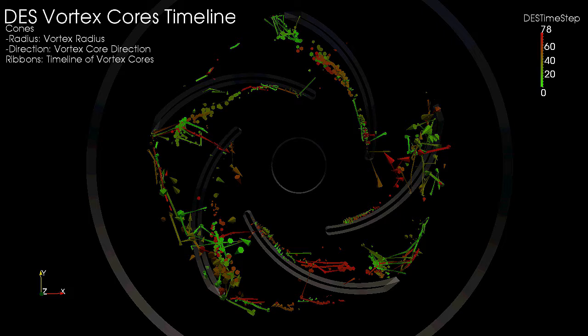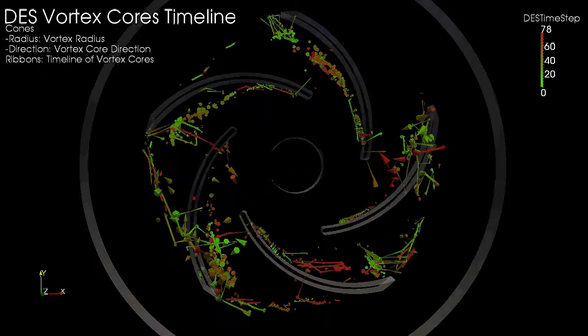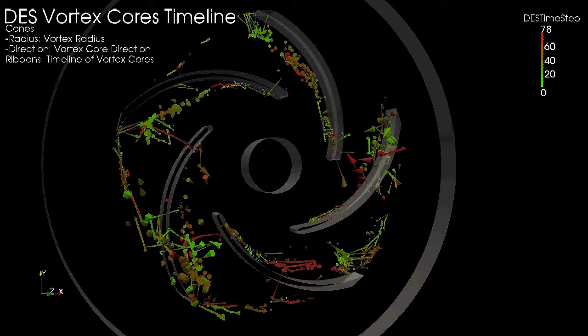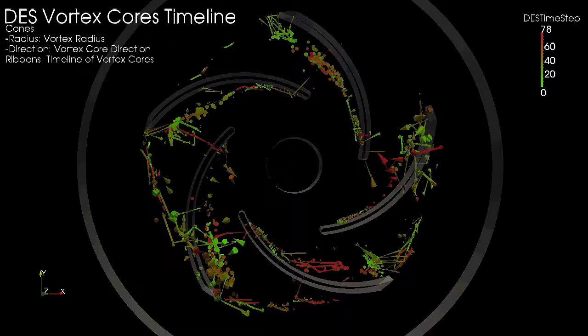Each ribbon's center moves from the initial time step, colored in green, through the final time step, colored in red, tracking a single vortex. Here, we see the visualization for the DES simulation.